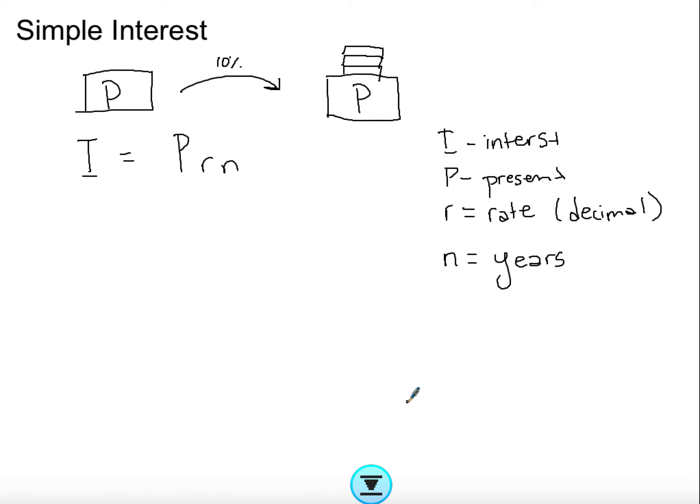The N is your years and we're going to stick with years at this level. Later on things do advance to how often per year but right now we're only doing it once a year so we are sticking to N being years.